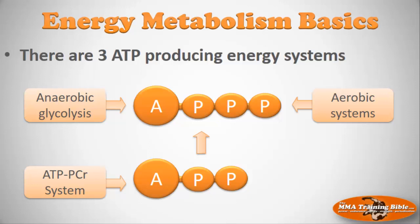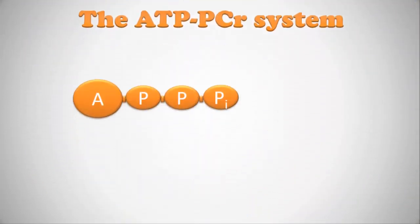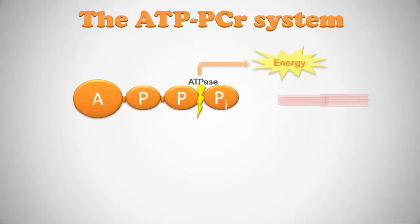The ATP-PCR system goes by many names — some call it the phosphagen system — but ATP-PCR best describes what it does. To review: ATP is broken apart by an enzyme called ATPase (you can always tell it's an enzyme by the '-ase' ending). ATPase splits apart the ATP molecule, releasing energy that allows muscles to contract.